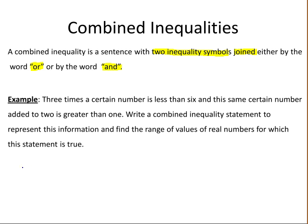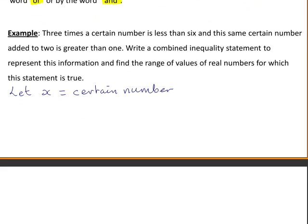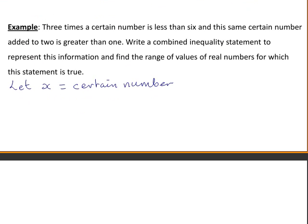We let our certain number be equal to x. We are told that three times a certain number is less than six, so that is 3x < 6. And this same certain number, x, added to two, so x + 2 is greater than one.